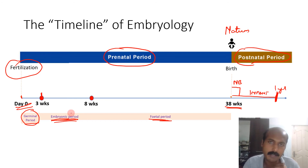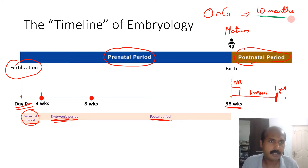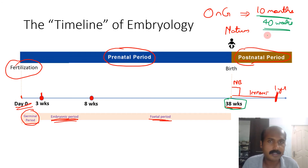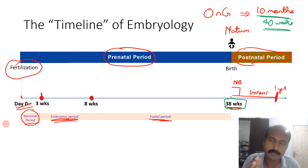Any insults or interference with the normal developmental pattern during the embryonic period can affect organ development. From an obstetric and gynecology point of view, the duration of pregnancy is considered to be 10 months, equal to 40 weeks (taking one month as four weeks). You can see a discrepancy: embryologically it is 38 weeks, but obstetrically it is 40 weeks — a clear two-week difference. In obstetrics, pregnancy is calculated from the last menstrual period.